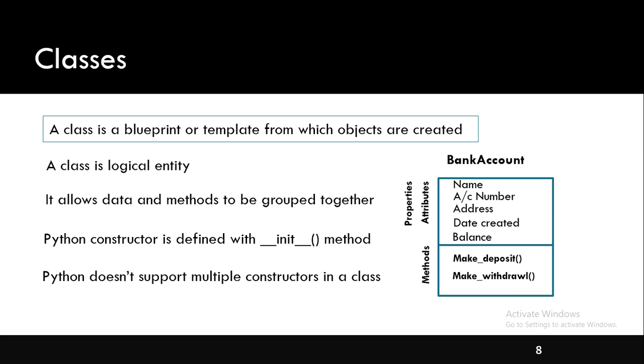Now let us try to understand what is a class. Unlike procedural programming language where the main emphasis is on functions, in object oriented programming class and objects are the main aspects. A class is a blueprint or template from which objects are created. It is a logical entity that allows data and methods to be grouped together.